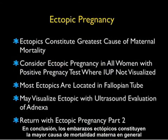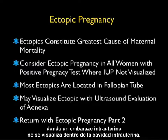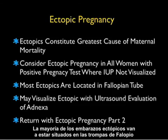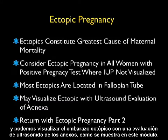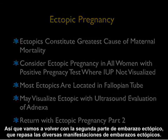In conclusion, ectopic pregnancies constitute the greatest cause overall of maternal mortality. We must consider an ectopic pregnancy in all women with a positive pregnancy test where an intrauterine pregnancy is not visualized within the fundal part of the uterus. Most ectopic pregnancies are going to be located in the fallopian tube, and we may actually visualize the ectopic with ultrasound evaluation of the adnexa, as shown in this module. We'll return with ectopic pregnancy part 2, which goes over the varied manifestations of ectopics.